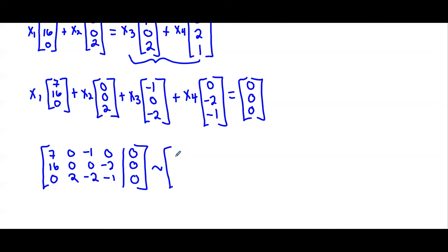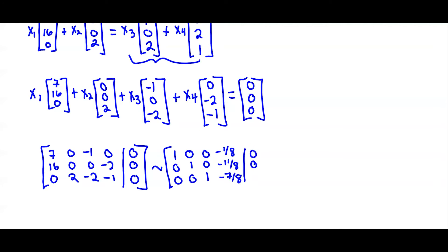If you row reduce this — I used the calculator — we get the following result. Reading by column: 1, 0, 0; 0, 1, 0; 0, 0, 1. And the last column gives negative one-eighth, negative 11-eighths, and negative seven-eighths.